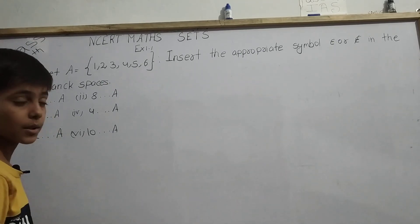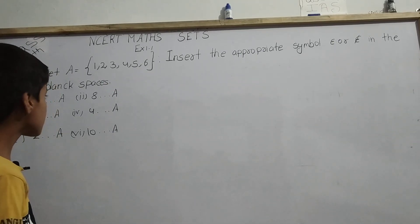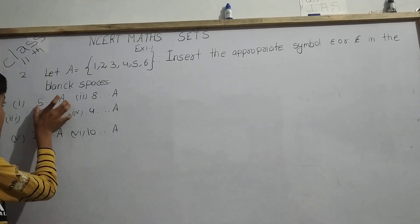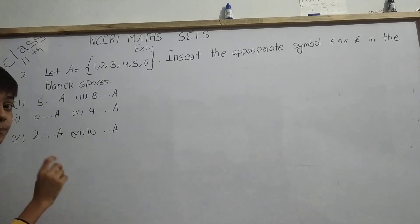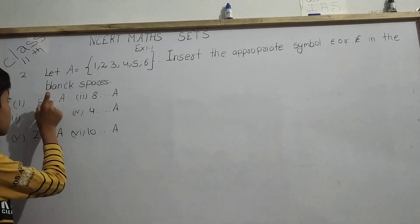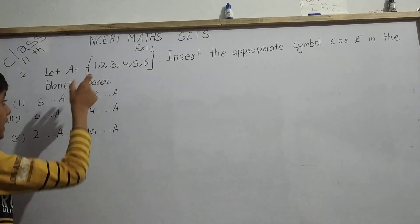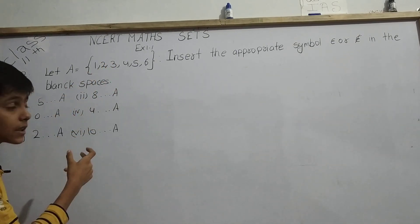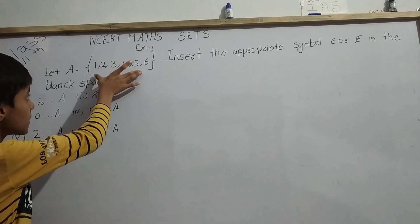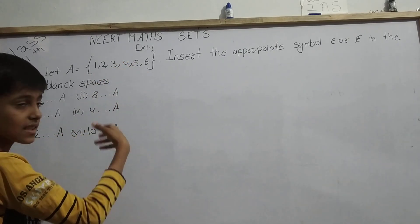Here the first is 5 dash A. It means we have to tell whether 5 belongs to A or not. What is our A? This whole set of 1, 2, 3, 4, 5, 6 is called A in this question.